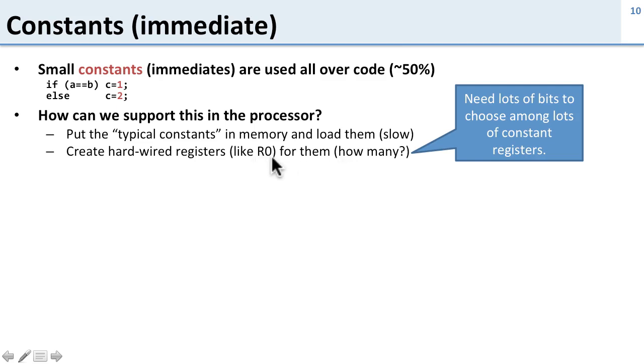Because if we're going to have a whole bunch of these—say we don't just want R0, we want to encode 0, 1, 2, minus 1, 128—all of a sudden we need a lot of bits to choose which one of those registers to use and it's going to start taking up a lot of space in our instructions.